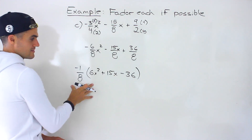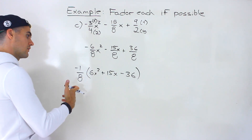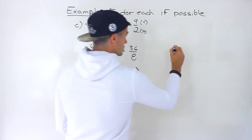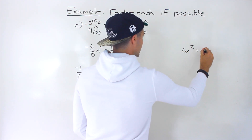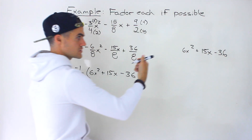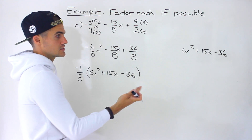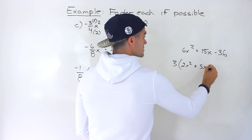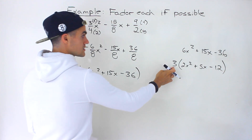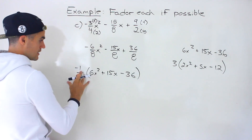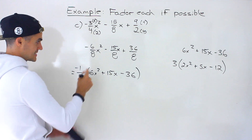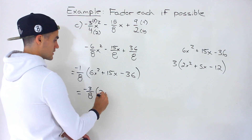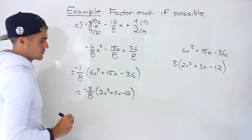This initial expression and this are the same thing — we just took out the lowest common denominator of 8 and also a negative 1 because the leading coefficient is negative. Now write out the quadratic 6x² minus 15x plus 36 and factor it. First check for greatest common factor — between 6, 15, and 36 we can take out a 3. Taking out 3 leaves us with 2x² plus 5x minus 12. That 3 goes into the numerator, so the main expression becomes negative 3 over 8 times (2x² plus 5x minus 12).